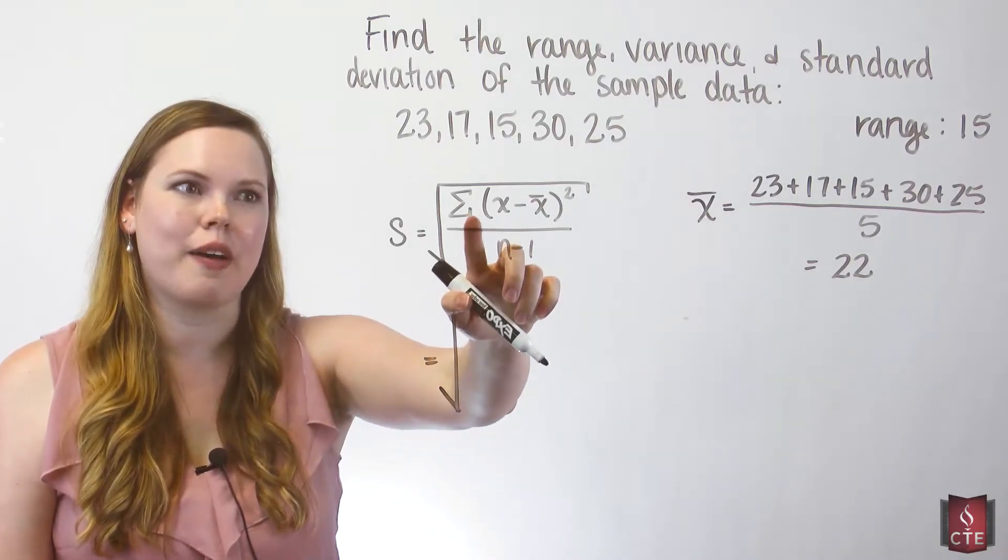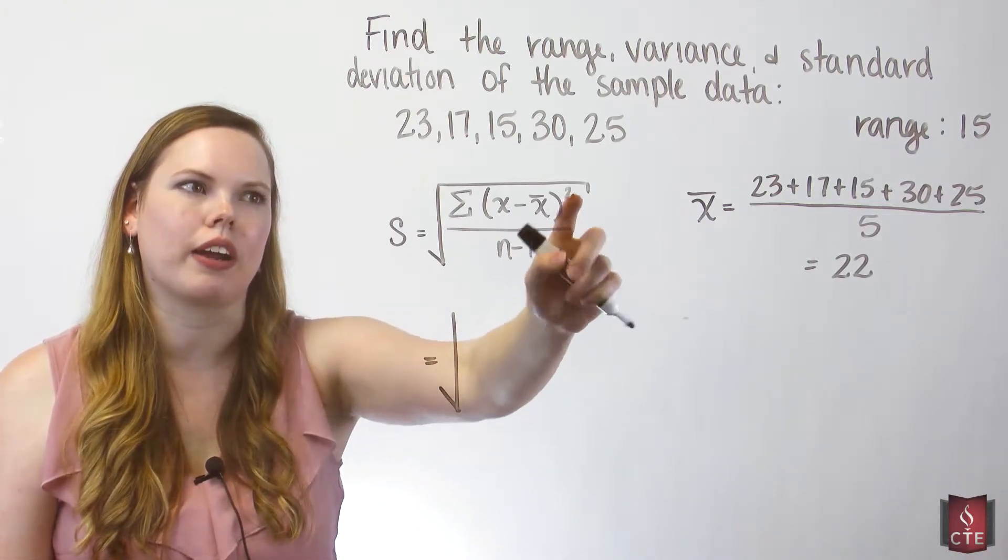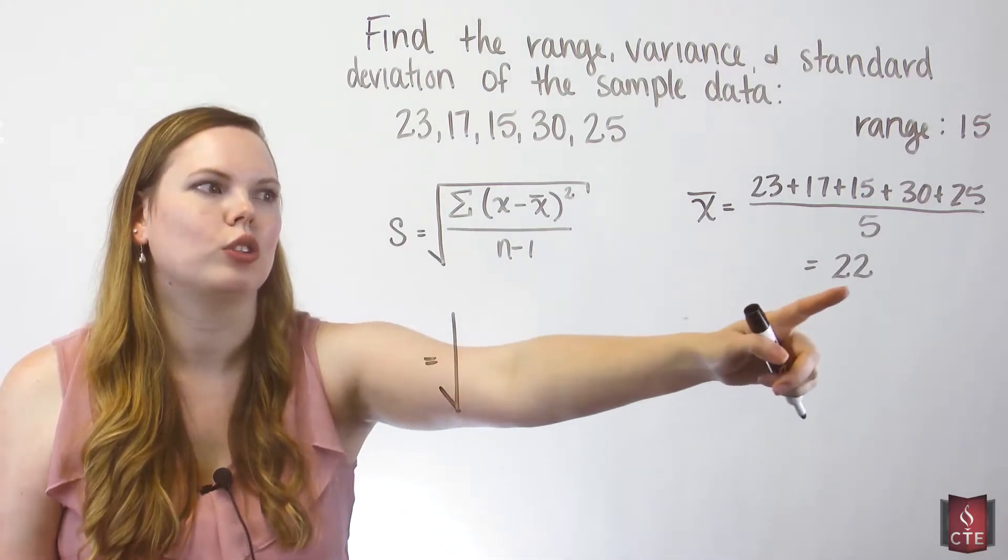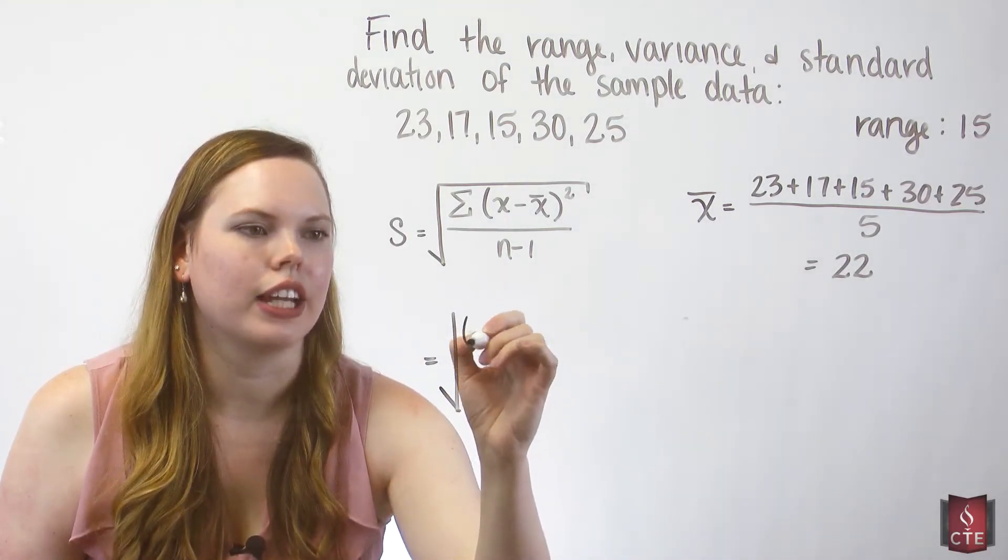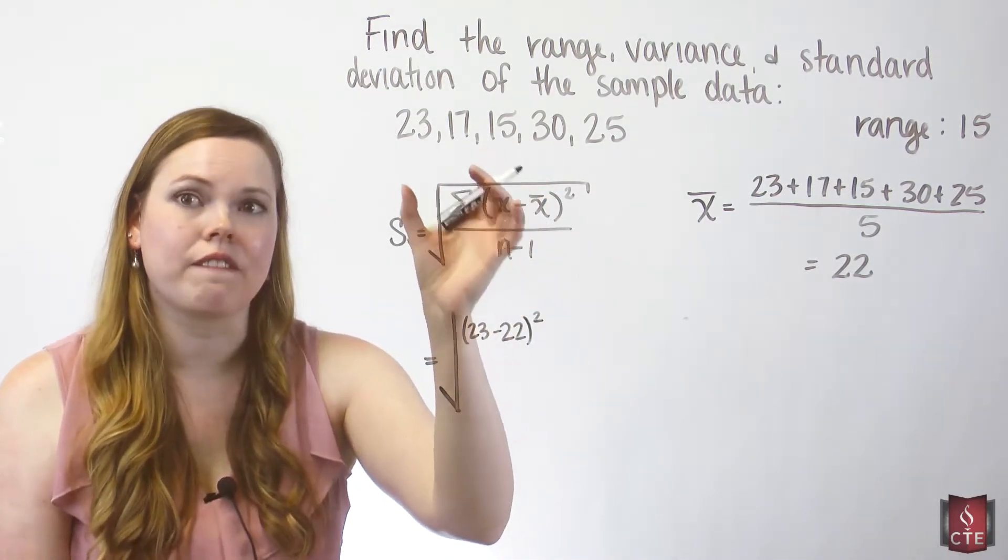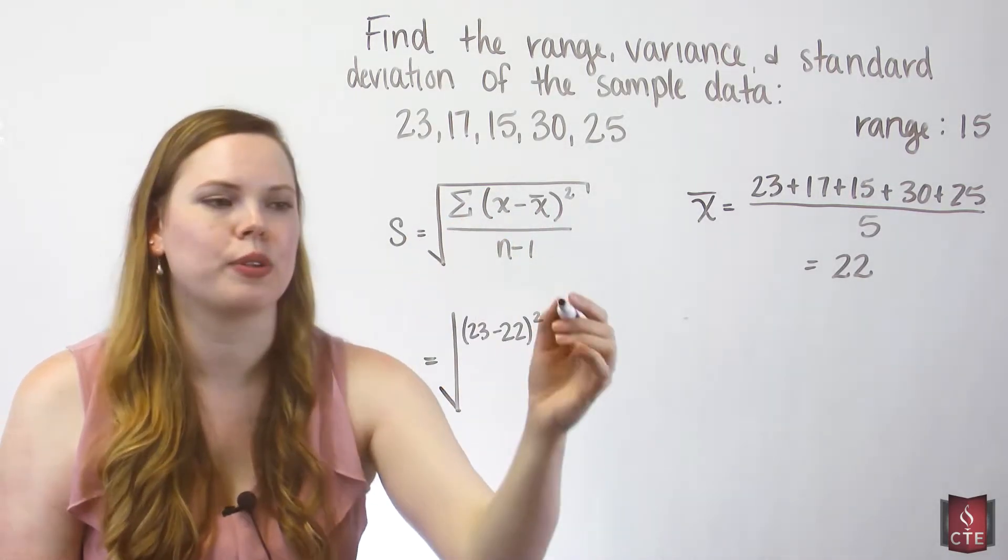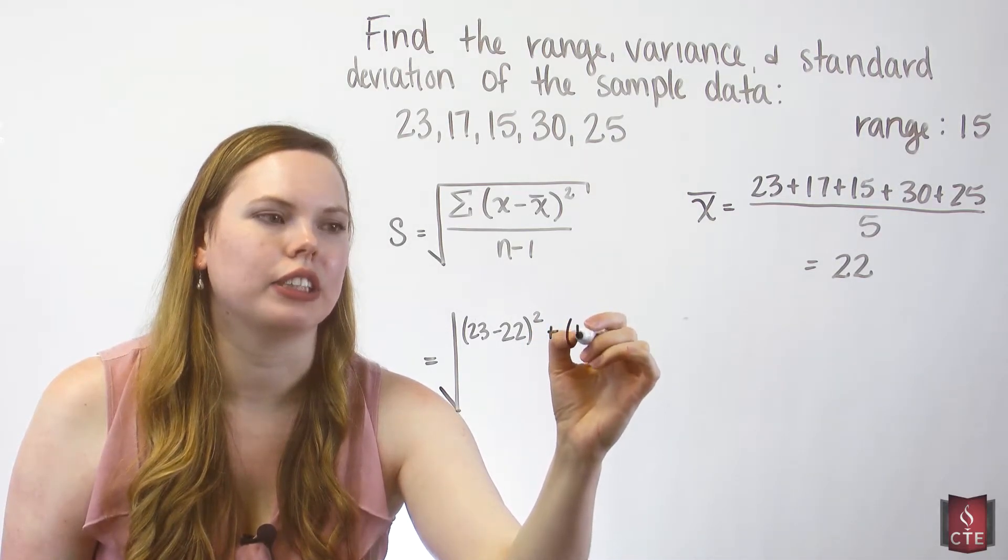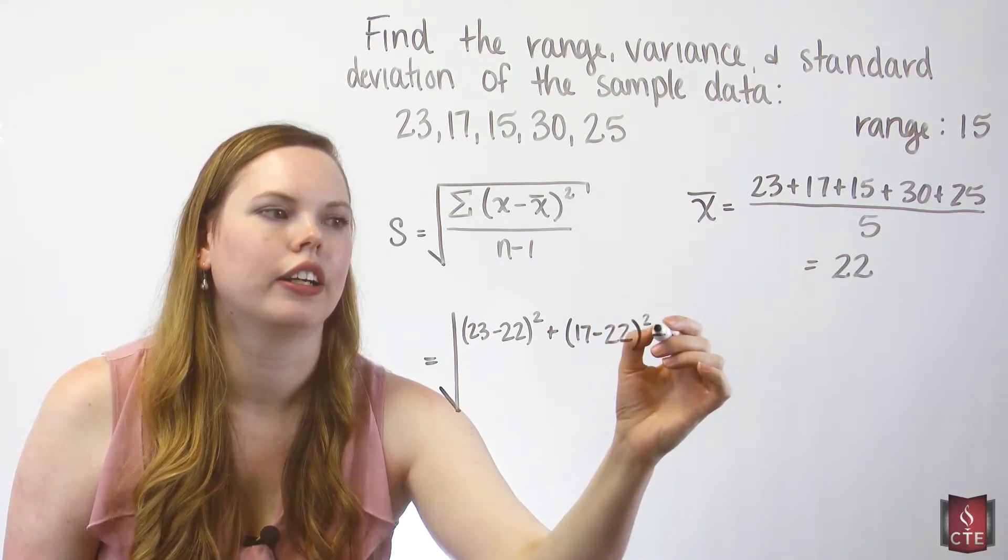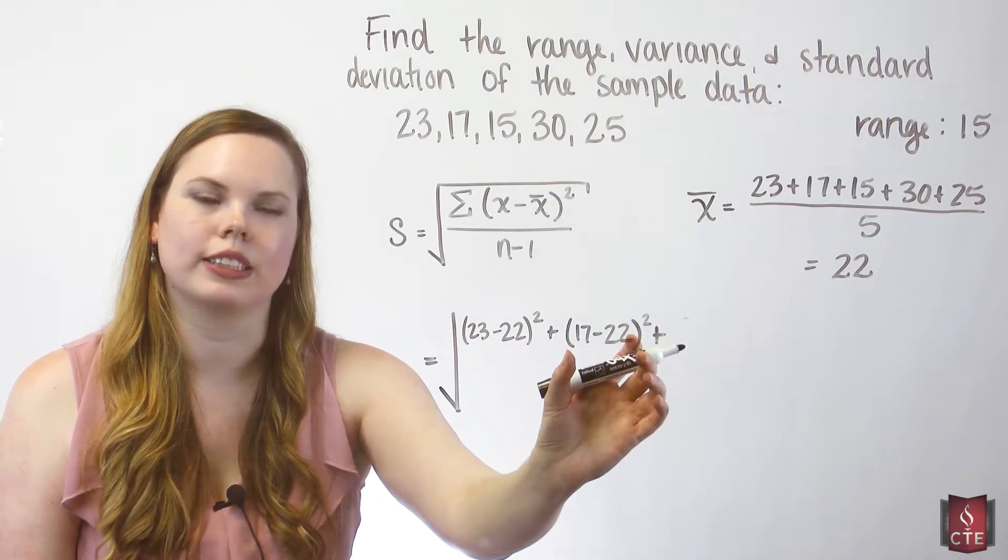So we're going to take the sum of each data value, we're going to subtract the mean from that data value and square it. So I'll start with my first data value, which is 23. I'll subtract the mean of 22. And then I'll square it. So this is my first x minus x-bar squared. We're summing them all up. So I'm going to add my second data value, which is 17, subtract the mean, square it. So we're summing these all up. You see our first x minus x-bar. This is our second x minus x-bar.